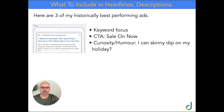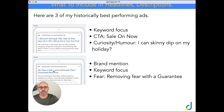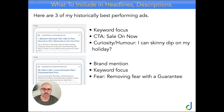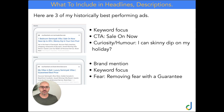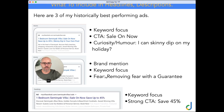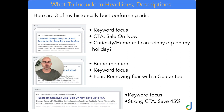The second ad leads straight away with brand mention: 'My Villas in Bali.' The second headline is keyword focus: 'Luxury Seminyak Villas.' And the third headline is 'Guaranteed Best Price' — that's a fear emotion, where we're removing that fear with a guarantee that you get the best price by booking direct. The third ad combines strong keyword focus with a strong call to action, showing exactly how much they're saving: 'Sale On Now, Save 45%.' That has also worked really well for us.